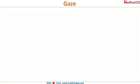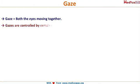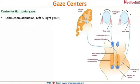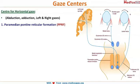We will concentrate only on the points necessary for our exams. By gaze, I mean both eyes are moving together, both eyes looking in the same direction — that is gaze. Gazes are controlled by certain centers in the central nervous system. For horizontal gaze, that is abduction and adduction — left and right gazes — it is the PPRF, or the paramedian pontine reticular formation.